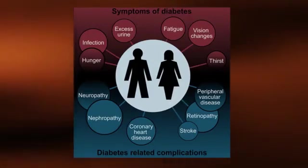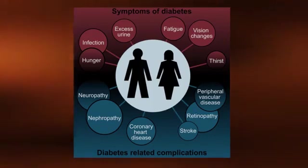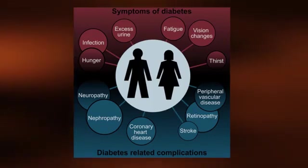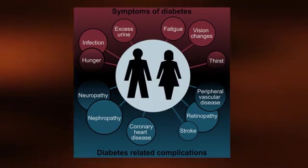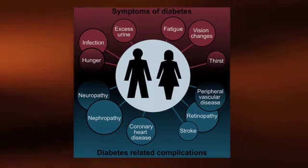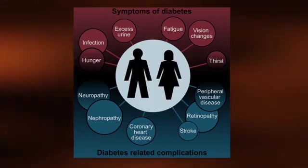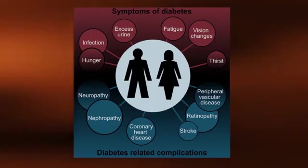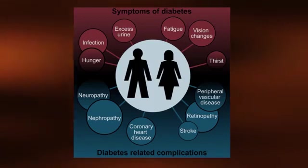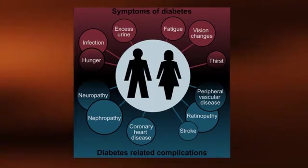The complications associated with type 2 diabetes are very serious and many. There is a 5 to 30-fold increased risk of retinopathy with eventual blindness, nephropathy or kidney disease, neuropathy or diabetic nerve pain, and lower limb amputations. Further, there is added risk for diabetics for coronary heart disease and stroke, as discussed in the previous video.